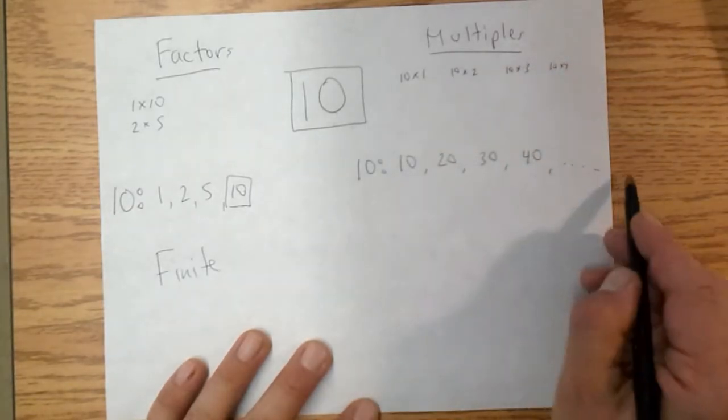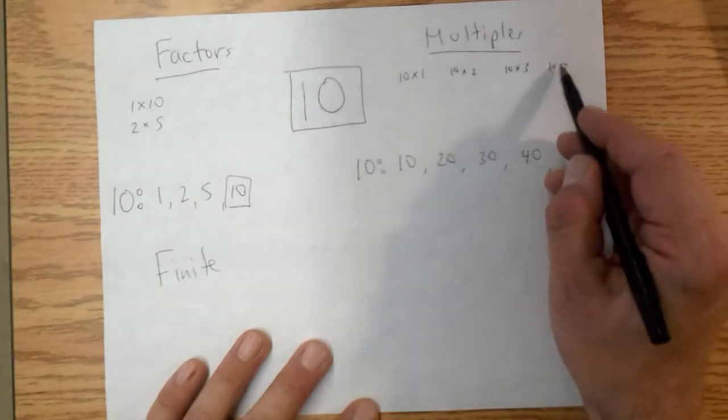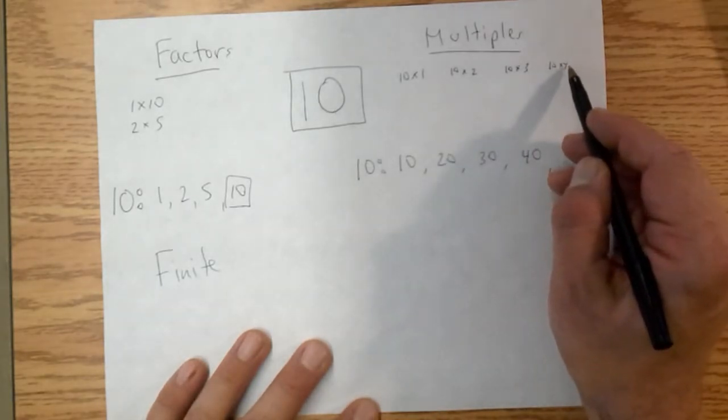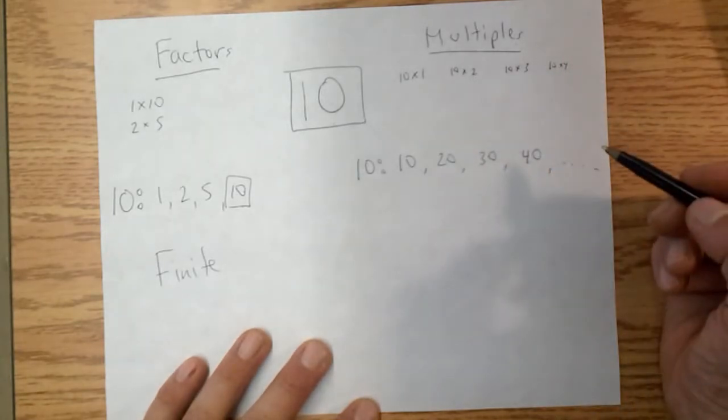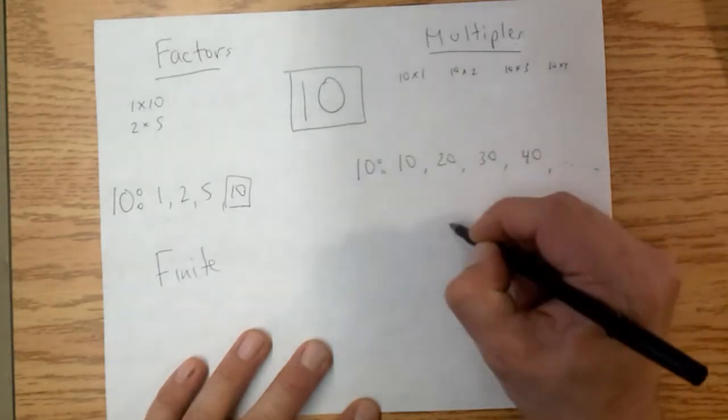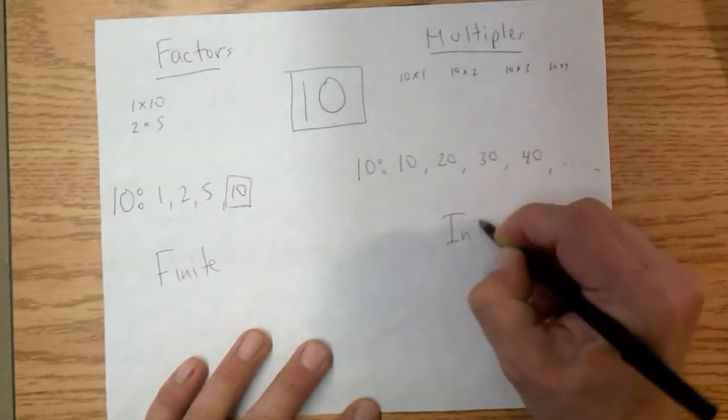And we can just go dot, dot, dot. This continues because we can do 10 times 4, we could do 10 times 5, 6, 7, 8, 9, 10. 10 times a million, 10 times a billion, 10 times as far as we can go. And then we can go even bigger. So that's actually going to always be an infinite list.